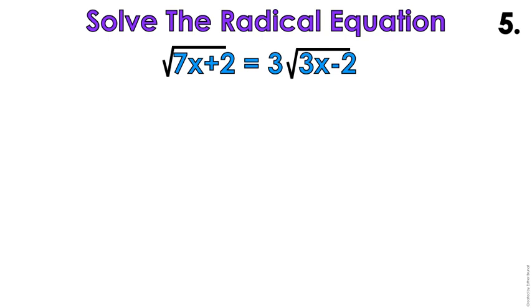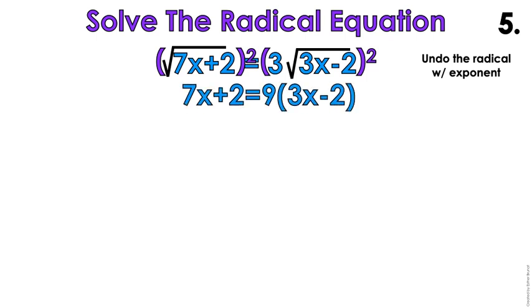Example number 5 out of 8. Okay, I have radicals on both sides. So I jump straight to, I'm gonna use exponent on both sides. It's a square root, so I'm gonna square both sides. When I do that, I get 7x plus 2 equals, 3 squared is 9, so that's why I have a 9. And then 3x minus 2, the square root on top of that went away because I squared it.